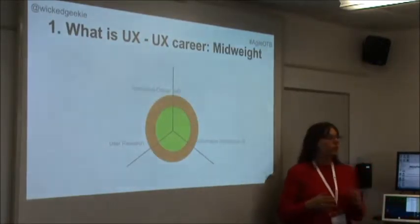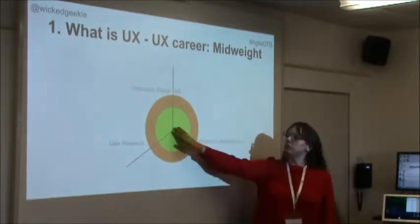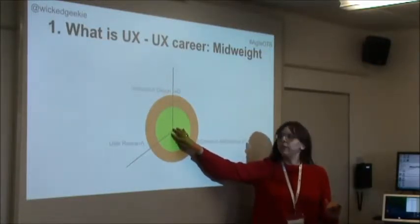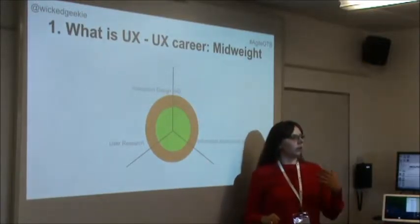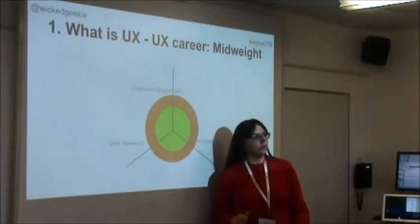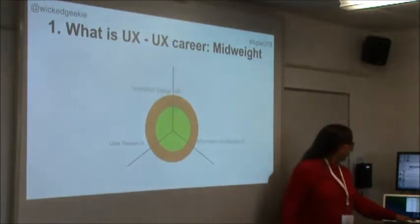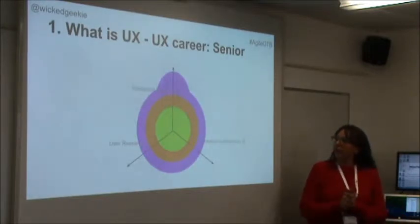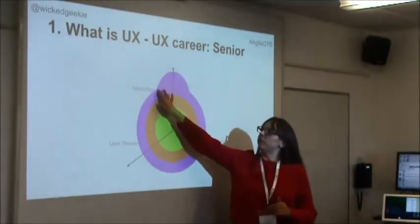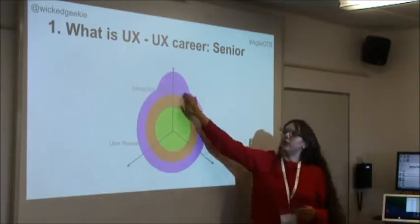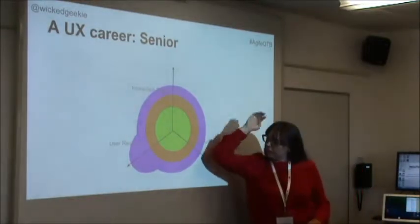At mid-weight, UXers start growing equally in all three disciplines — they've seen more products, started working. Junior stays about one to two years. As a mid-weight, they start seeing more complex problems, have more autonomy, and are given more responsibility designing solutions with a greater team, still under the supervision of a senior. When you have a senior, you start having little bubbles of extra knowledge — this is where, at senior level, we'd expect somebody to specialize or really develop an ability in interaction design, information architecture, or user research.